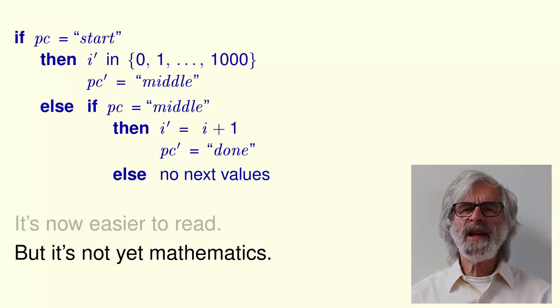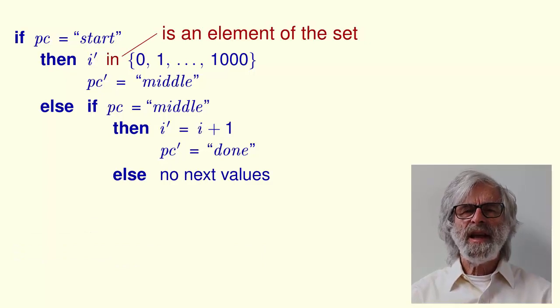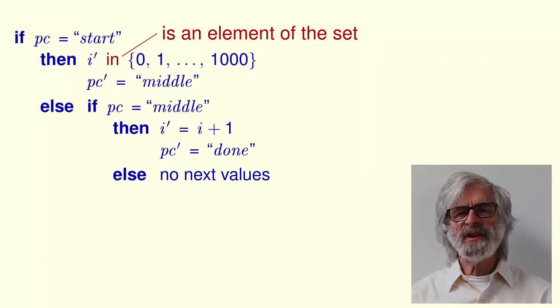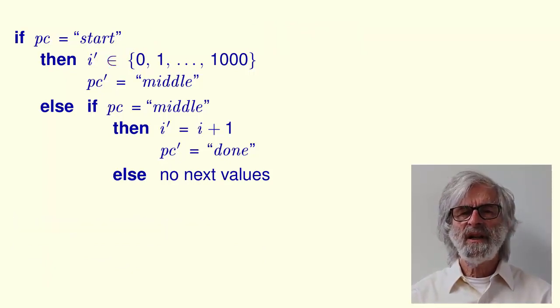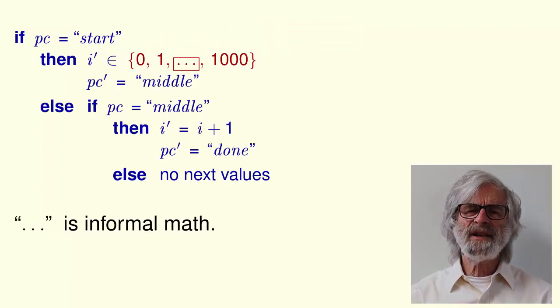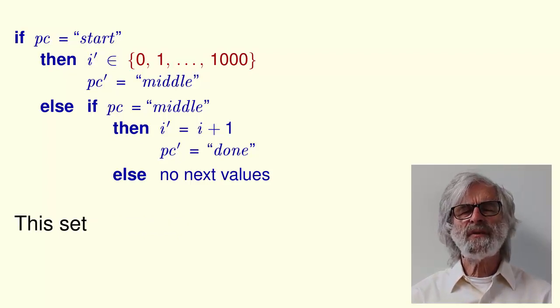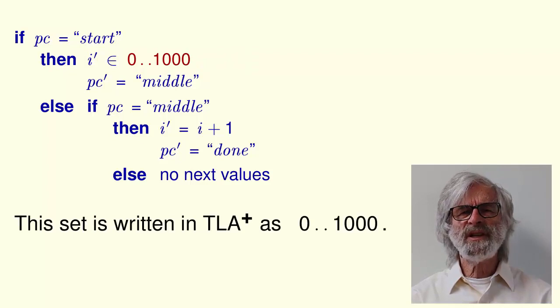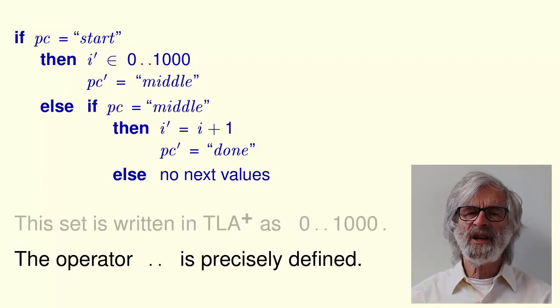IN here means is an element of the set of integers from 0 to 1000. IN is written in mathematics as this symbol. Dot, dot, dot is in formal math. We want to write this whole formula in a precisely defined language. The set of integers from 0 to 1000 is written in TLA plus like this, where the operator dot dot is precisely defined.